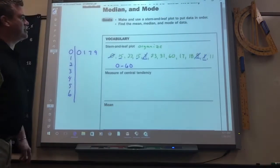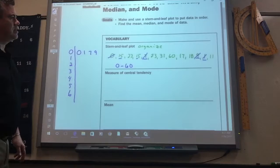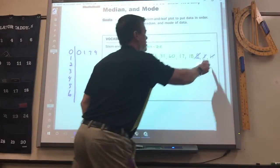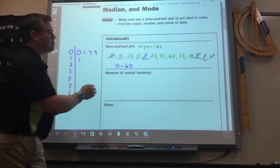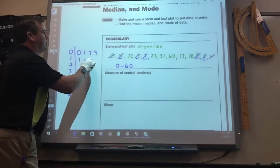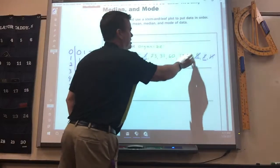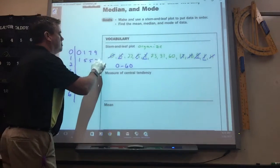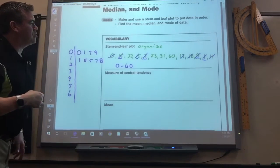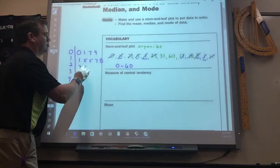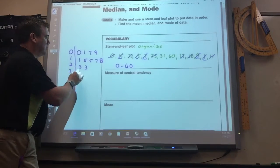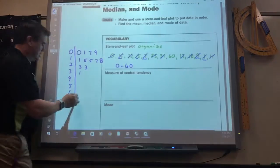Okay, then I get to the teens. Here's an 11, so I just put a 1 here. Then it's two 15s, right? So I put a 5 and a 5, and then a 17 and 18. Then in the 20s, there's two 23s, 31, and then a 60.